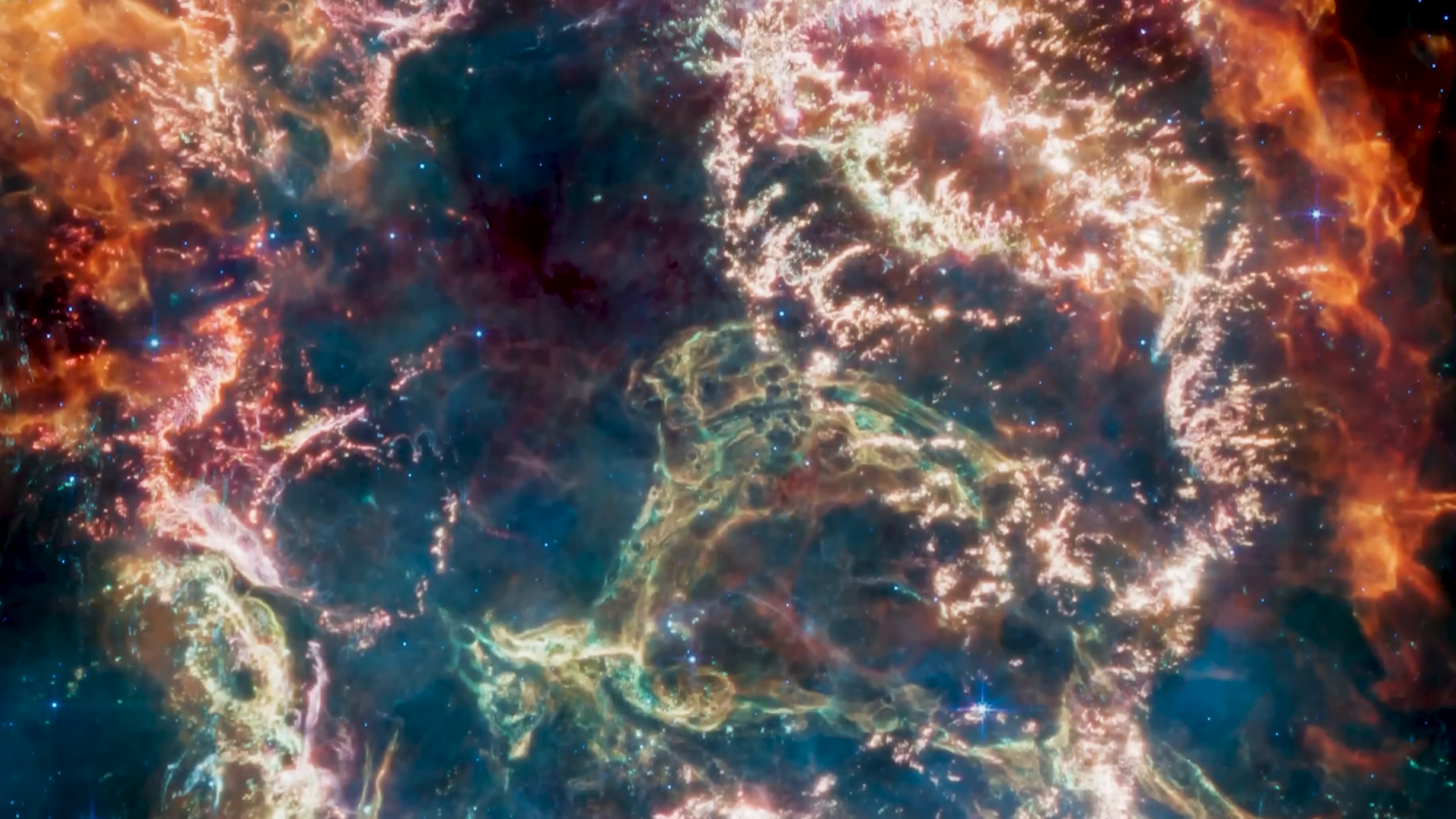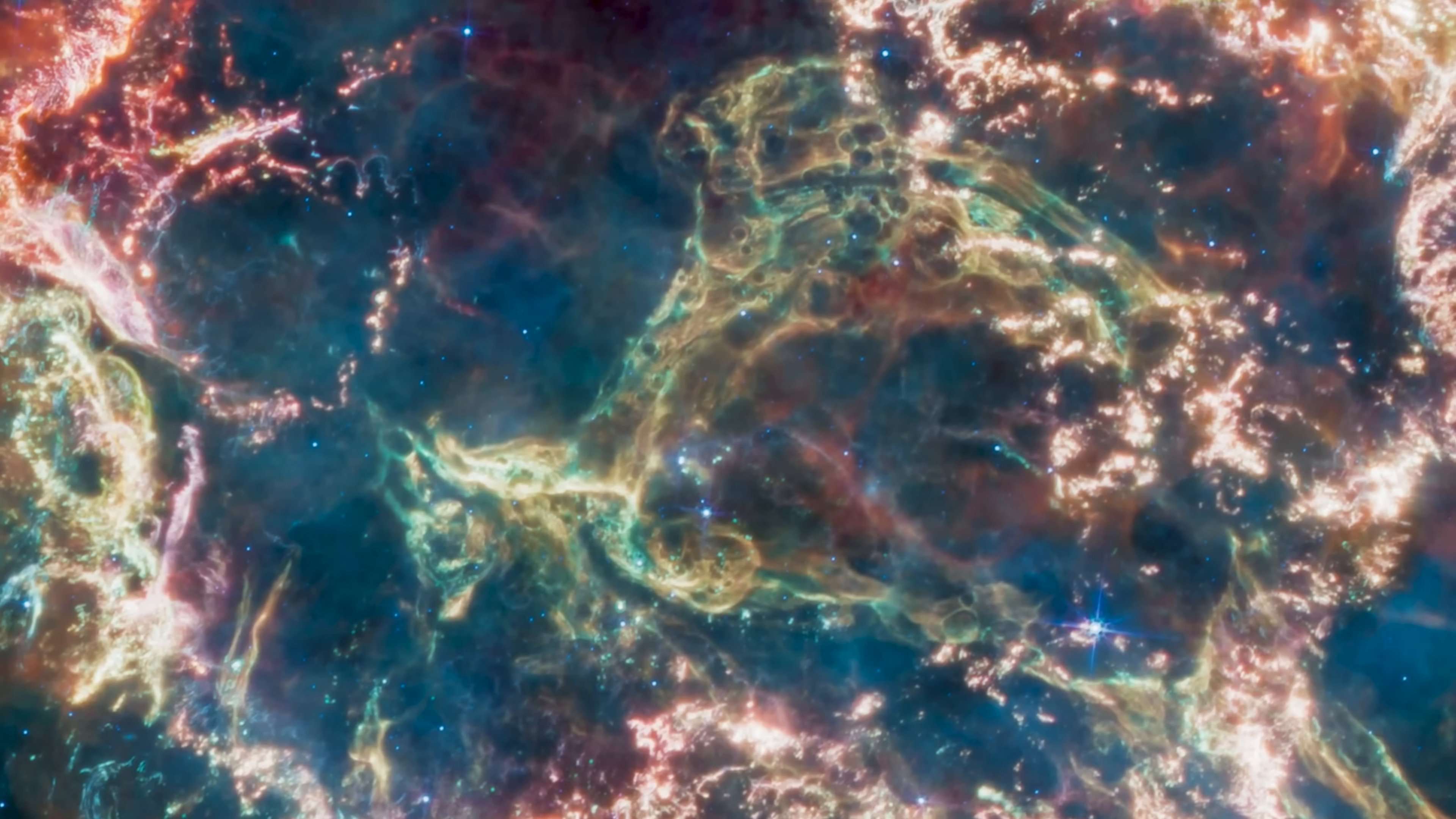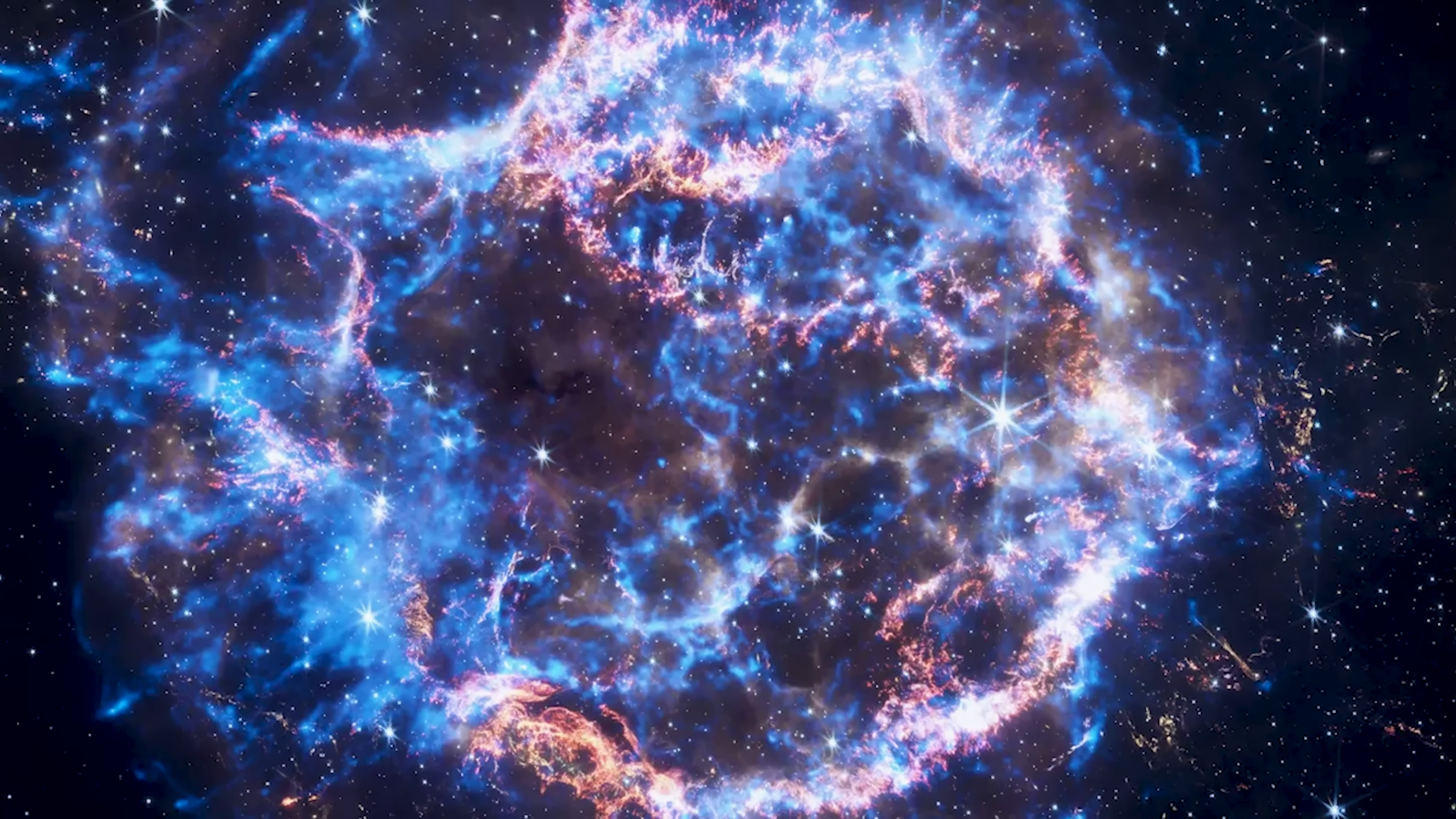And then there is Cassiopeia A, the remains of a supernova whose light reached us centuries ago. Webb's infrared vision exposes the intricate filaments and loops of expelled stellar material, challenging our understanding of supernova dynamics. Each structure tells a story of death and rebirth, as heavy elements forged in stellar cores are scattered across the cosmos, destined to form new stars, planets, and perhaps life itself.